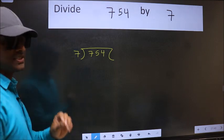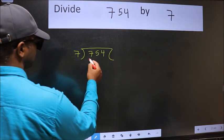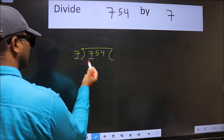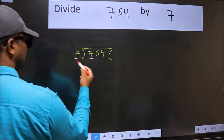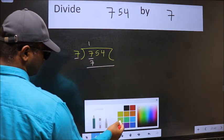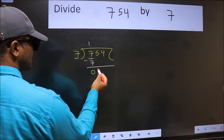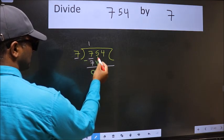This is step one. Here we have seven and here seven. When do we get seven in the seven table? Seven once seven. Now we subtract and get zero. After this, bring down the next number, which is five.